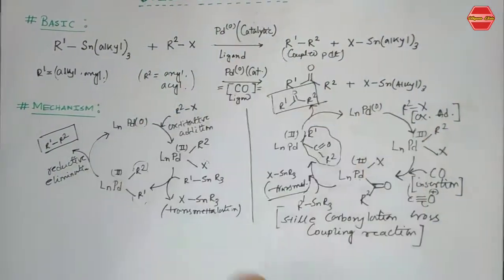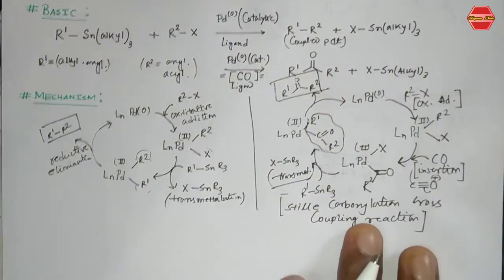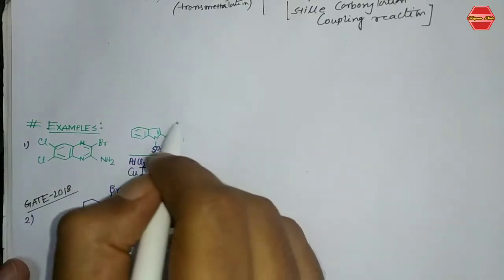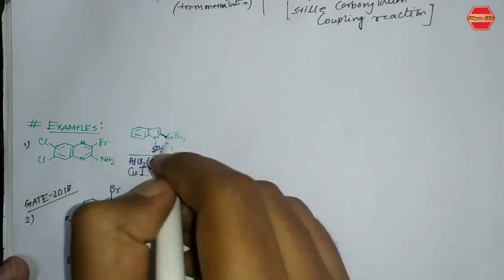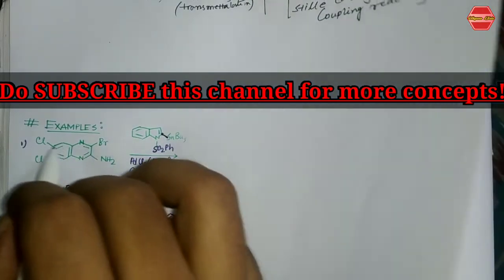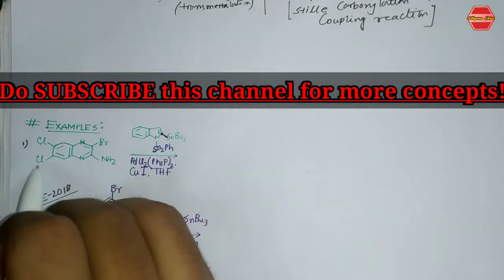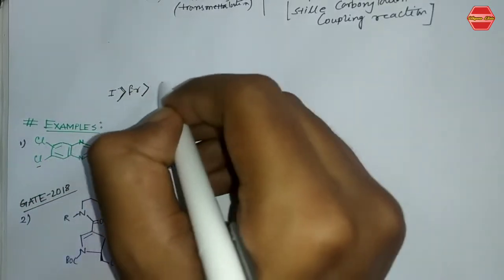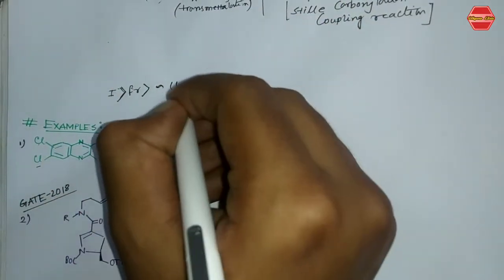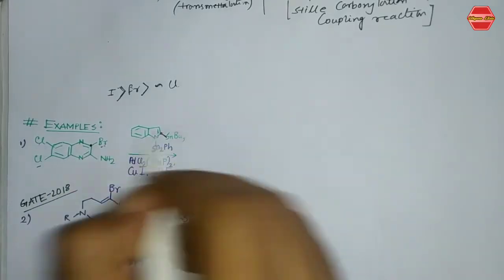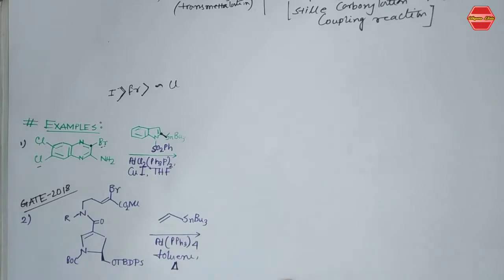Let's see some important examples where you can predict the product. The first example has a large substrate with an indole-type coupling partner bearing SnBu3. There are three types of leaving groups: one Cl, another Cl, and a Br. From the reactivity order, iodine and bromine are faster as organohalide partners, while Cl is slower because the C-Cl bond is quite strong. So the Br participates preferentially in this Stille cross-coupling.